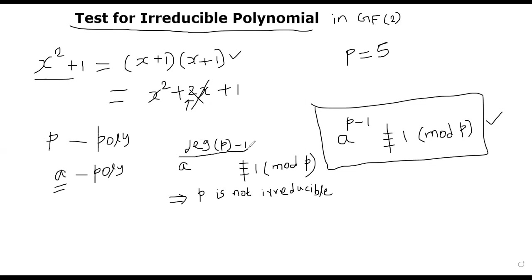Why did I put degree of p minus 1 here? This is exactly the same from a structural point of view. A is a polynomial; here A is a number. p is a polynomial; here p is a number. This is actually the order of the group — Z* sub p has order p minus 1. So this is the same as the order of the multiplicative group in the world of polynomials. If you exclude the zeroth polynomial, you will have 2 to the degree of p minus 1 polynomials in your space of polynomials. That is the reason why we use degree of p minus 1.